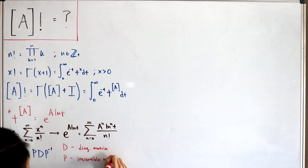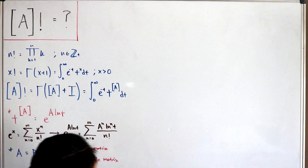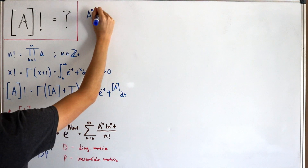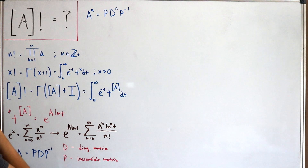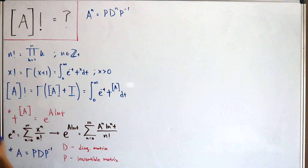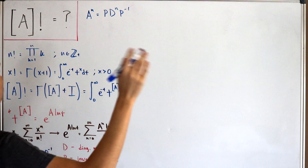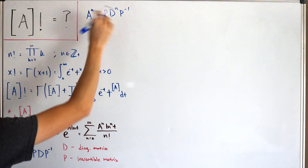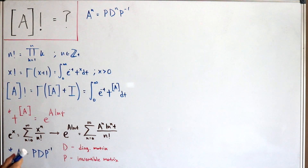If we raise our diagonalizable matrix to a power, then A to the power n equals P times D to the power n times P inverse. The reason we only raise D to the power n is that when you expand the product n times, the P inverse and P terms cancel each other out, leaving only P on the left and P inverse on the right, with D repeated n times in between.